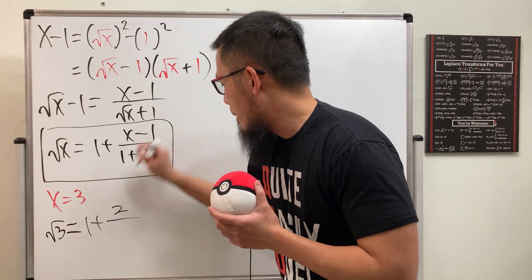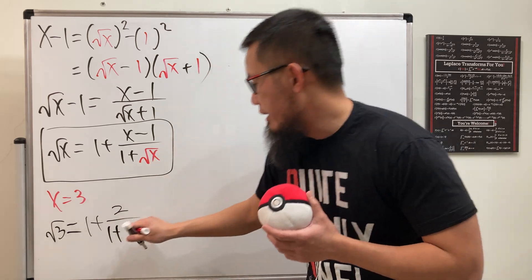3 minus 1 is equal to 2, and over 1 plus, as you can see right here, we have square root of 3.